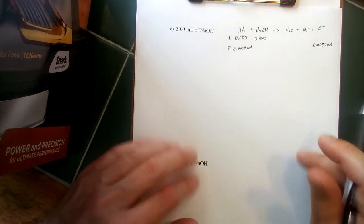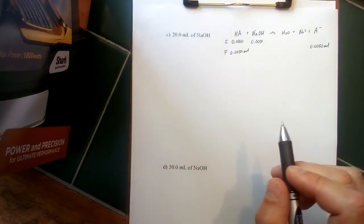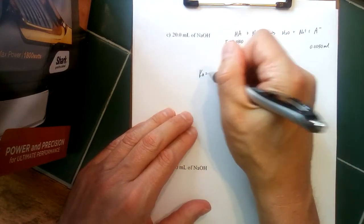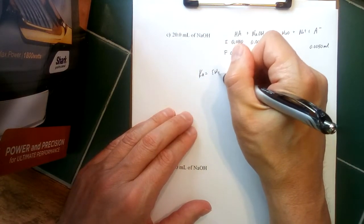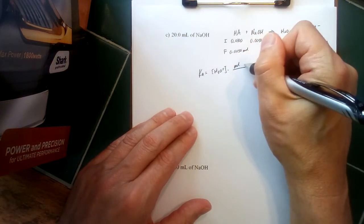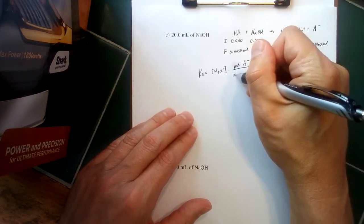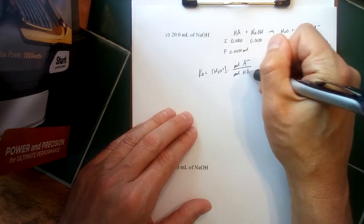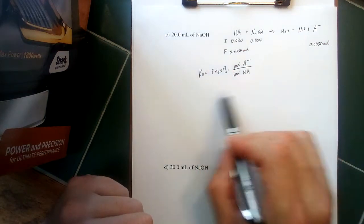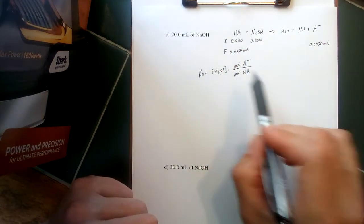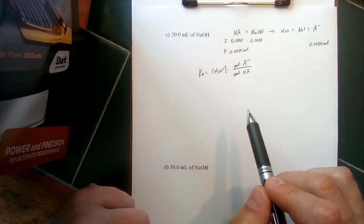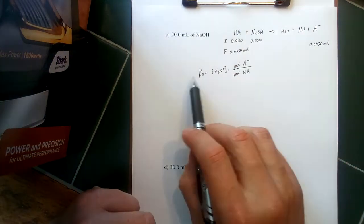This is definitely a buffer—we've got the weak acid and the conjugate base—so we can use this modified version of our equilibrium constant expression where we've got moles of the conjugate base over moles of the weak acid. Now as you look through the textbook, there's a version here where logs are taken of all these different portions called the Henderson-Hasselbalch equation.